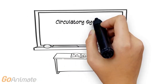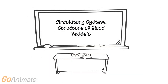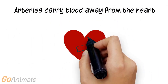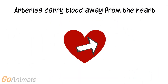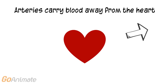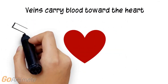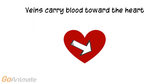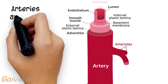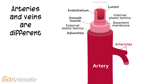Let's learn about the structure of blood vessels. Arteries carry blood away from the heart, while veins carry blood toward the heart. Arteries and veins are different, but both have three layers.